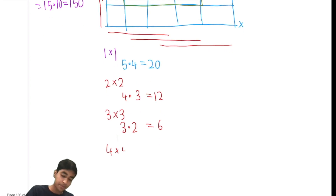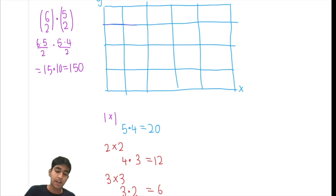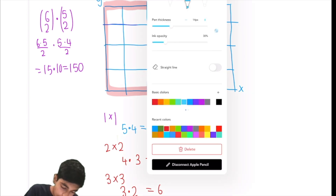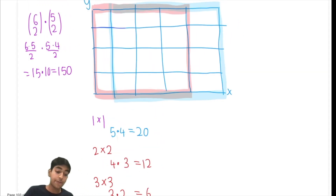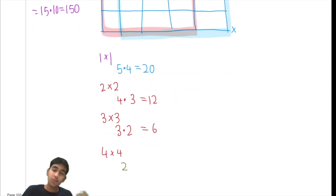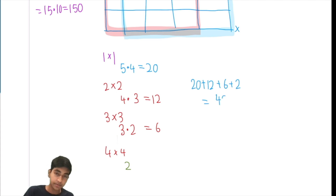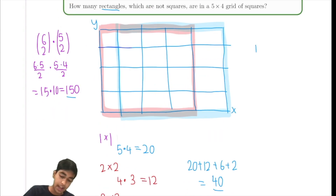What about four by four? For this, because the four by four is almost the entire grid, this one might be easier just to count manually. A four by four would look like this — that's one possibility, and the only other possibility is shifted over, so it's just two ways. And notice using our same logic, there's one way it spans four units on the y-axis and two ways on the x-axis. So 20 + 12 + 6 + 2 = 40 total squares. The number of rectangles that are not squares is 150 minus 40, that's 110.